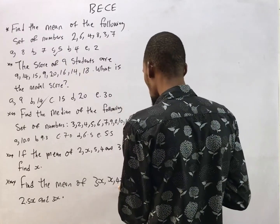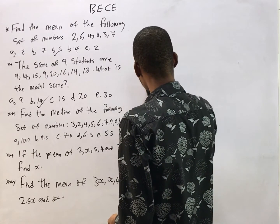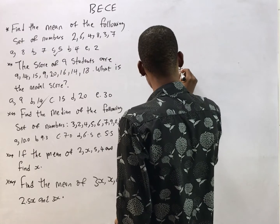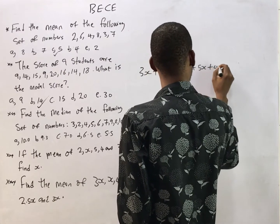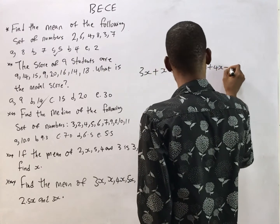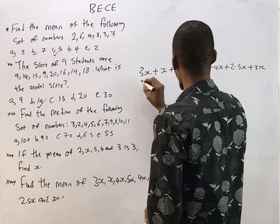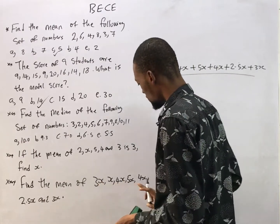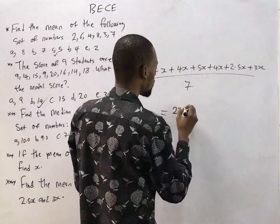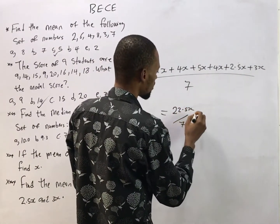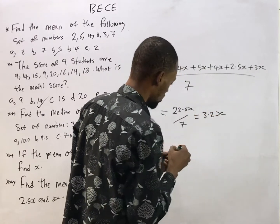The last question says: find the mean of 3S, S, 4S, 5S, 4S, 2.5S, and 3S. The mean is simply the sum of all terms divided by how many there are. Adding them: 3S + S + 4S + 5S + 4S + 2.5S + 3S = 22.5S, and there are 7 terms, so the mean is 22.5S over 7, which gives approximately 3.21S.